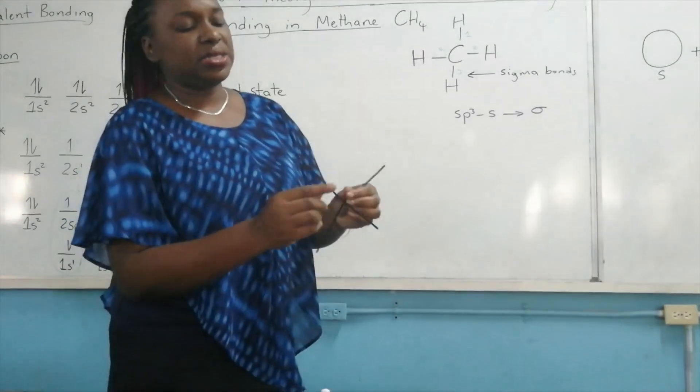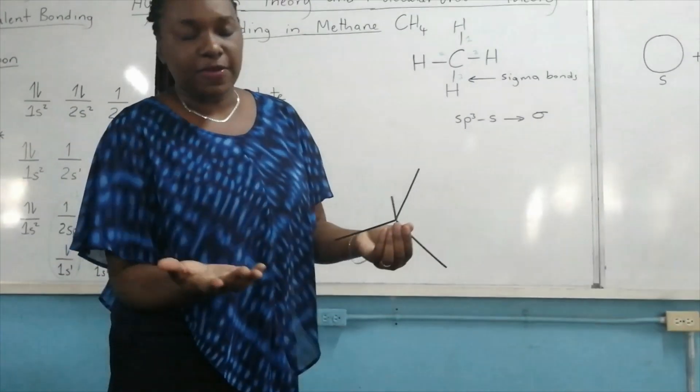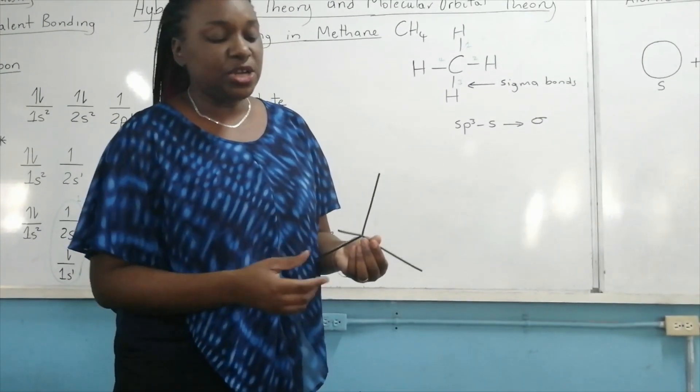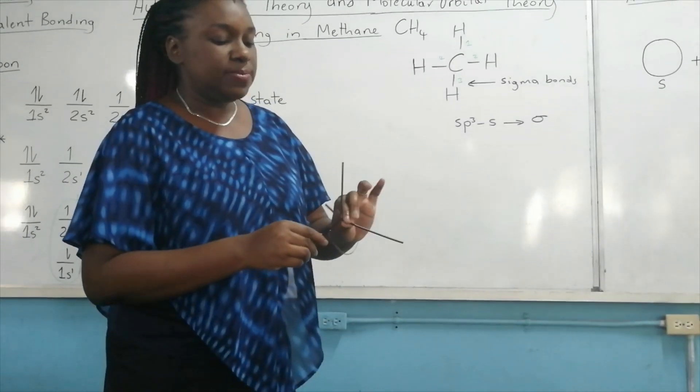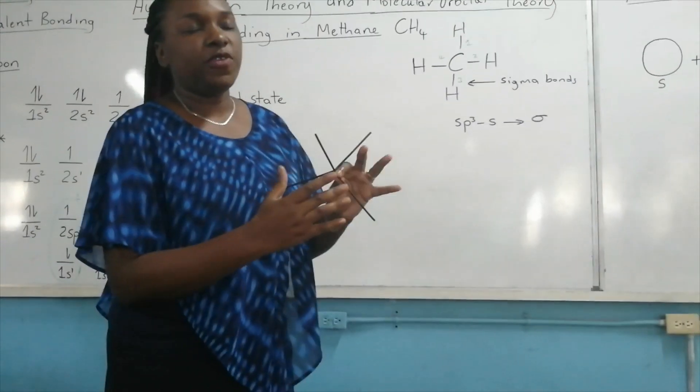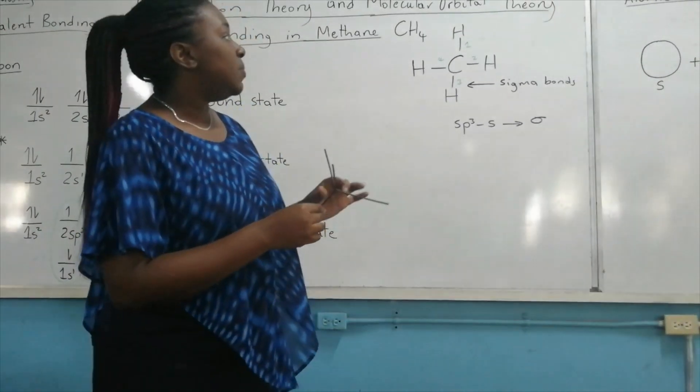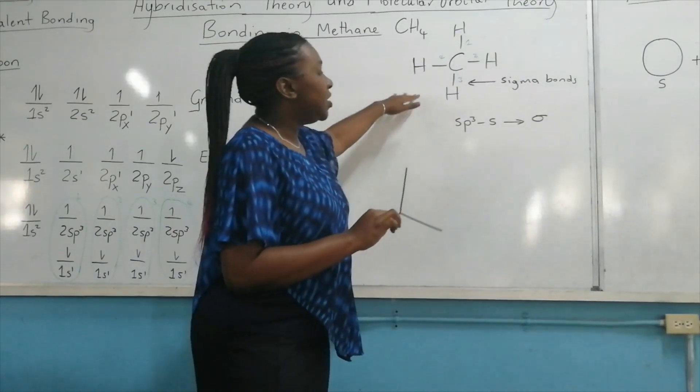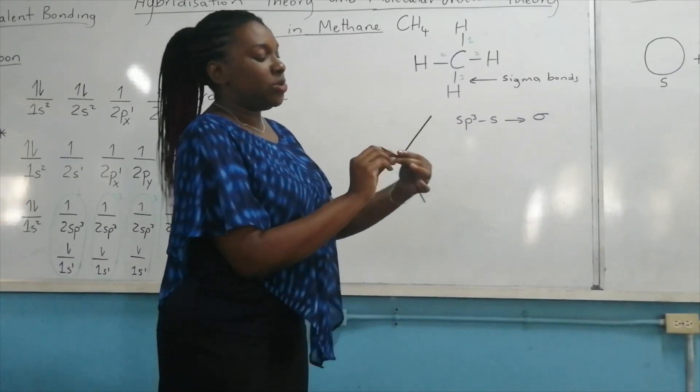Why is that so? Because these electrons, they're negative, and they tend to repel each other. So they want to be the maximum distance away from each other. And as such, methane now takes the configuration of a tetrahedron.